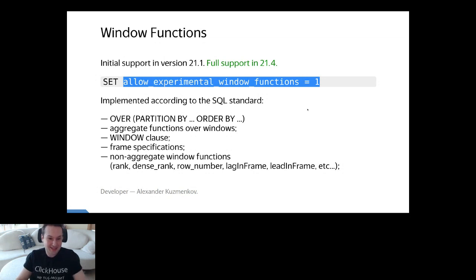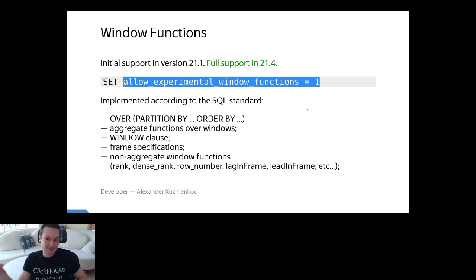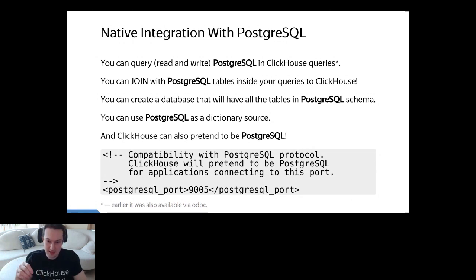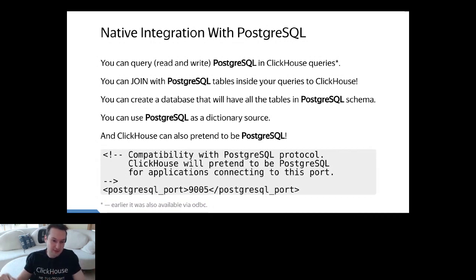The next feature is quite broad — it is about native integration with Postgres. You can query your Postgres tables from ClickHouse. You can both do SELECT and INSERT. You can join Postgres tables with ClickHouse tables inside ClickHouse. You can even create a database inside ClickHouse that will automatically represent all the tables in an external Postgres schema. You can use Postgres as a dictionary source. Previously it was available only with the ODBC interface, which is not very convenient or performant. The native implementation is way better.